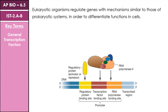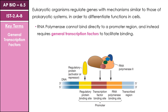Eukaryotic gene regulation operates in a generally similar way to that of prokaryotes, with the difference here being that we do not have the operator sequence and that the promoter region includes a few regulatory sequences including things like enhancers and silencers. The key to regulating gene expression in eukaryotic cells is to differentiate the functions of different types of cells. In eukaryotic systems, RNA polymerase cannot directly bind to the promoter region and instead requires some general transcription factors to facilitate its binding to the gene sequence.